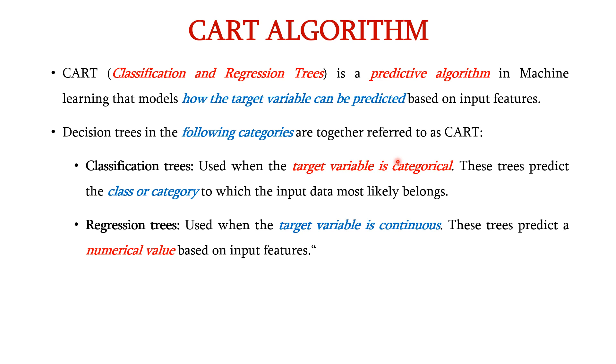Decision trees in the following two categories are together referred to as CART: classification trees and regression trees.